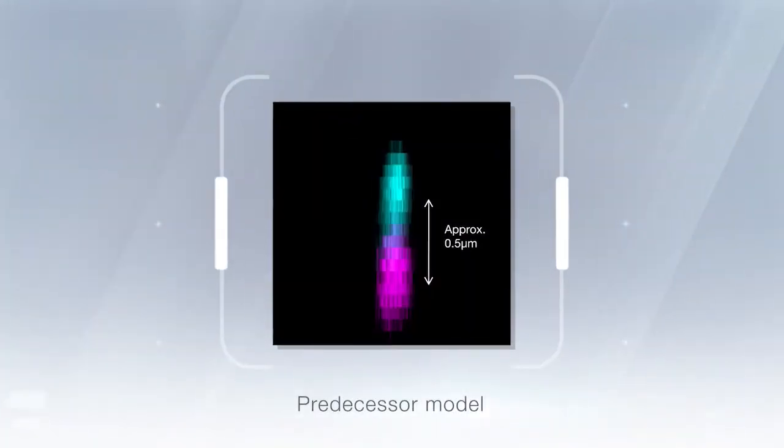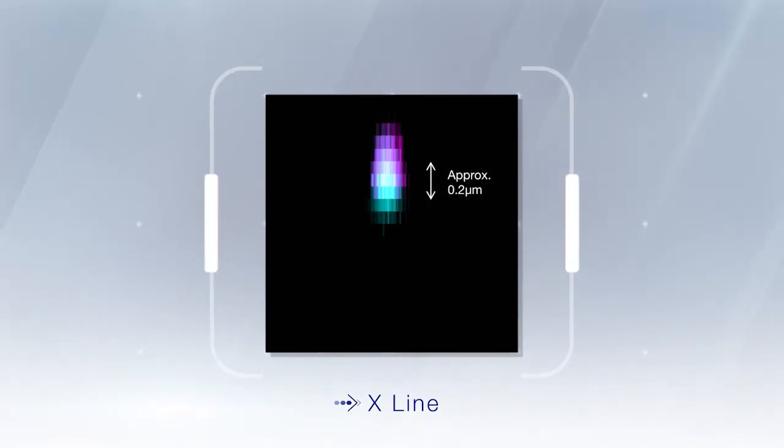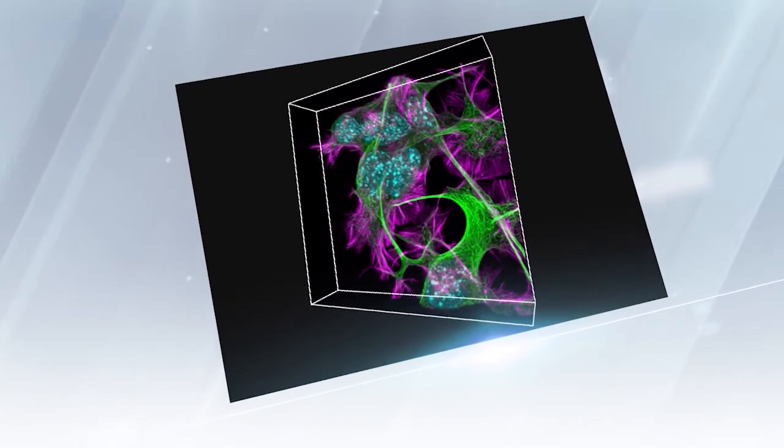X-Line objectives have an extensive chromatic aberration correction from 400 nanometers to 1,000 nanometers, generating true multi-color images.